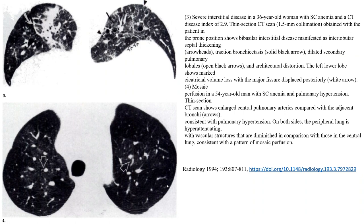The third image shows severe interstitial disease in a 36-year-old woman with sickle cell anemia and a CT disease index of 2.9. A thin-section CT scan obtained with the patient in the prone position shows bilateral interstitial disease manifested as interlobular septal thickening, head arrows indicated; traction bronchiectasis, solid black arrows indicated; dilated secondary pulmonary lobules, open black arrows indicated; and architectural distortion. The left lower lobe shows marked cicatricial volume loss with major fissure displacement posteriorly, wide arrows indicated.